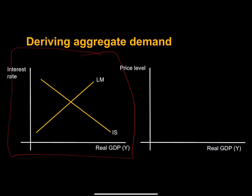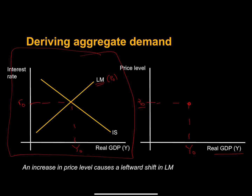Let's start in equilibrium in our IS-LM framework with real GDP equal to Y0 and real interest rate equal to R0, and we are going to imply that the price level is equal to some P0. Our LM curve is derived in the money market and we assume in the money market that our price level is constant. So we're going to say here's our LM curve with a price level of P0. That is going to give us one real expenditure or real GDP-price level pair. Now let's increase the price level.